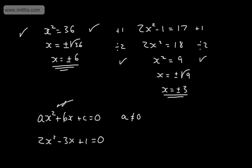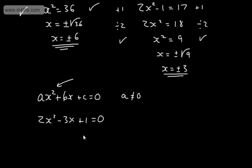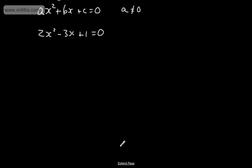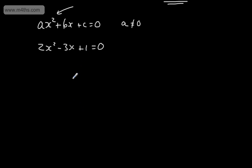Remember, with a quadratic, the highest power of x is x squared. So in this case, a would be equal to 2, b would be equal to negative 3, and c would be equal to positive 1. In this particular video, we're going to look at a certain case when c is equal to 0. So we're going to solve quadratic equations in the form ax squared plus bx equal to 0.